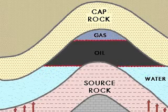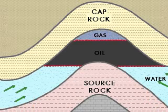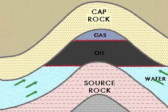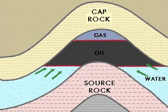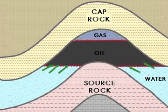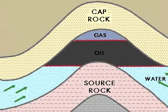During the process of accumulation of oil within the reservoir, gravity separation of water, oil, and gas takes place within the reservoir. Water being the heaviest occupies the lowest portion, oil the middle, and gas being the lightest occupies the upper parts of the pay zone.